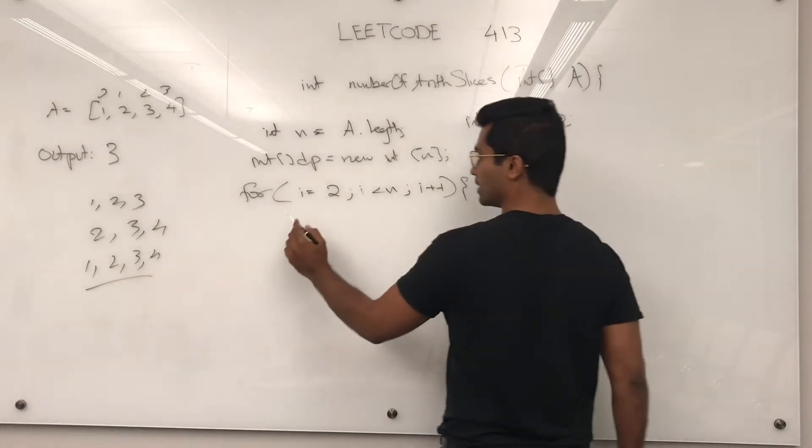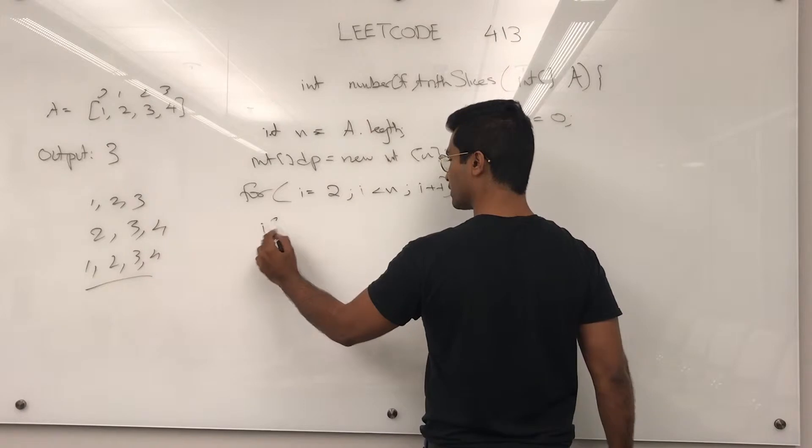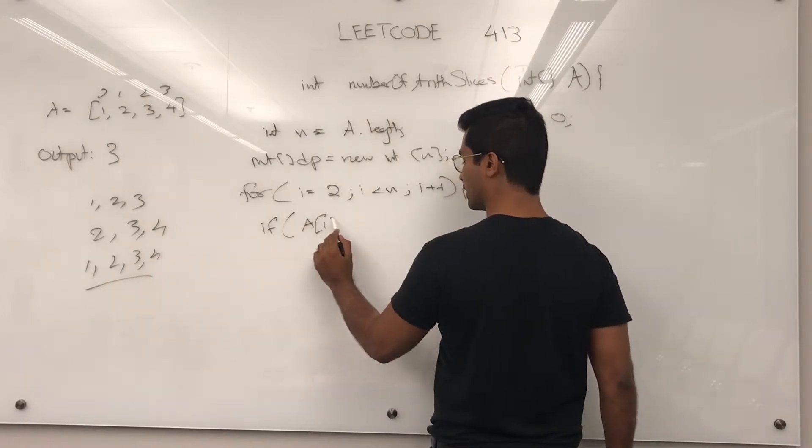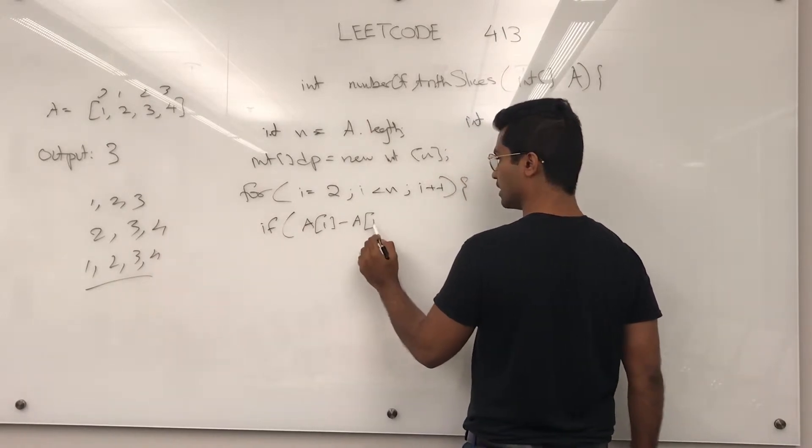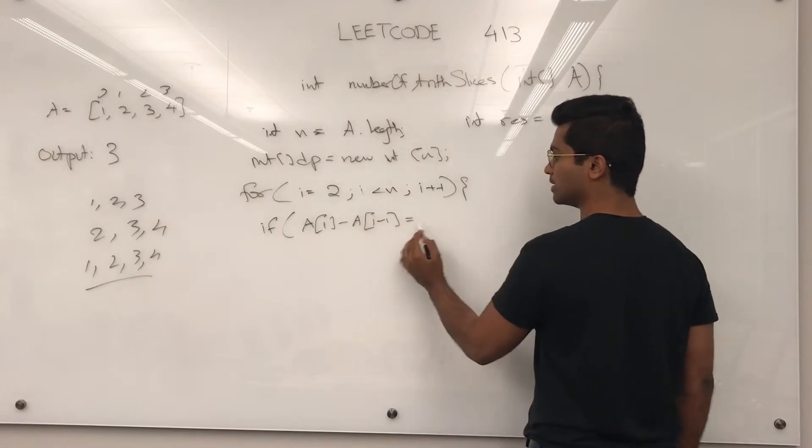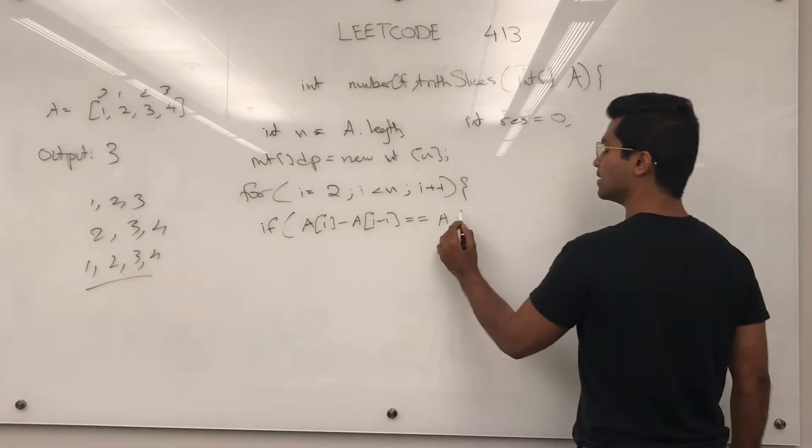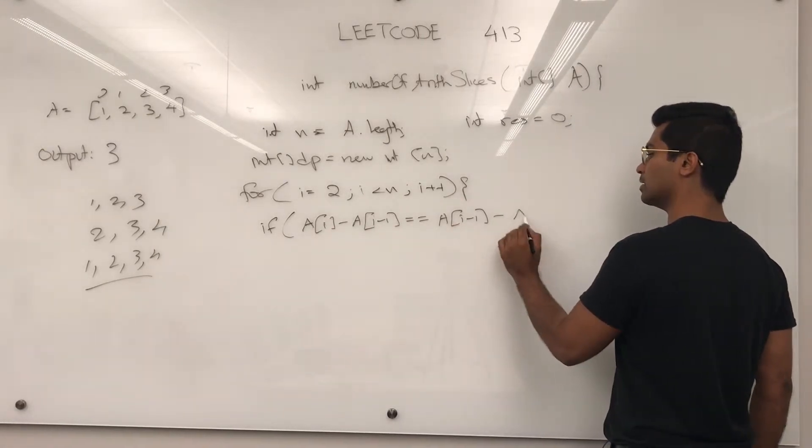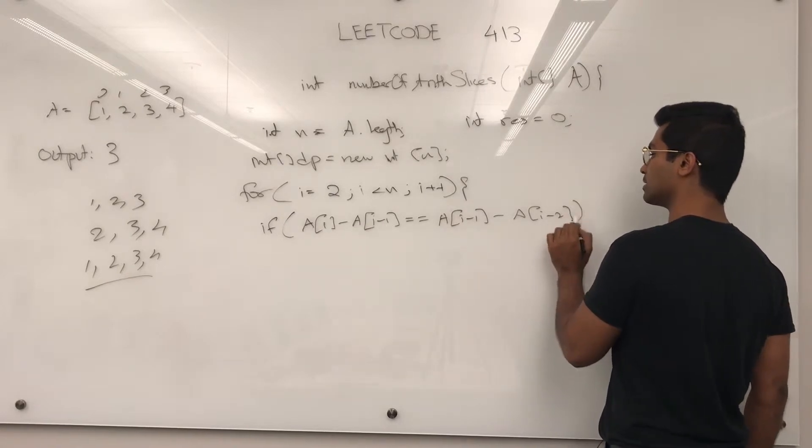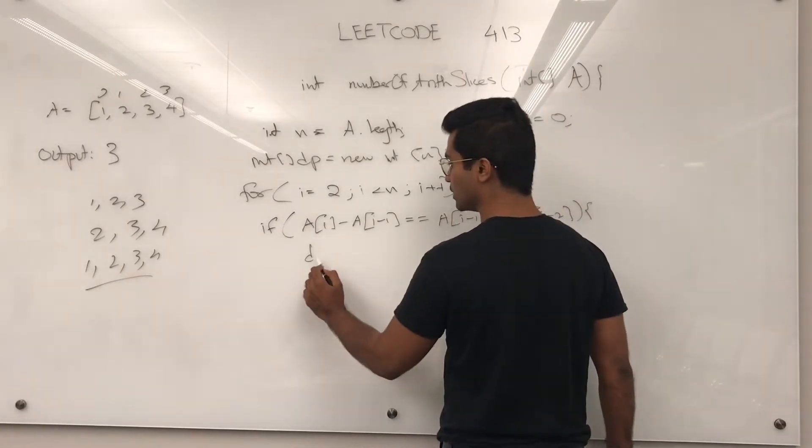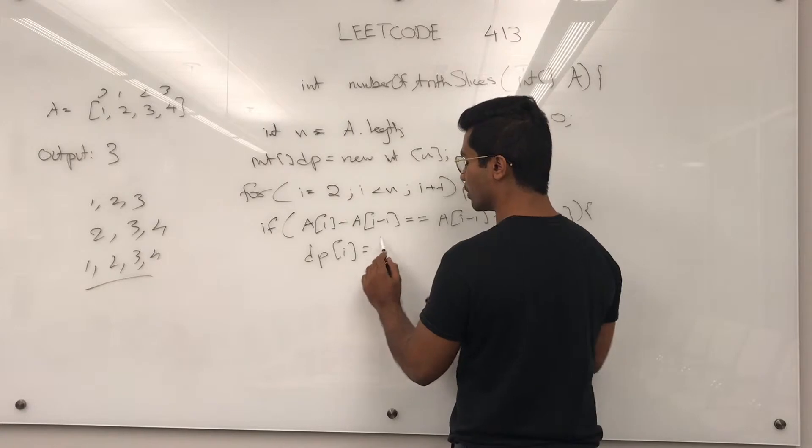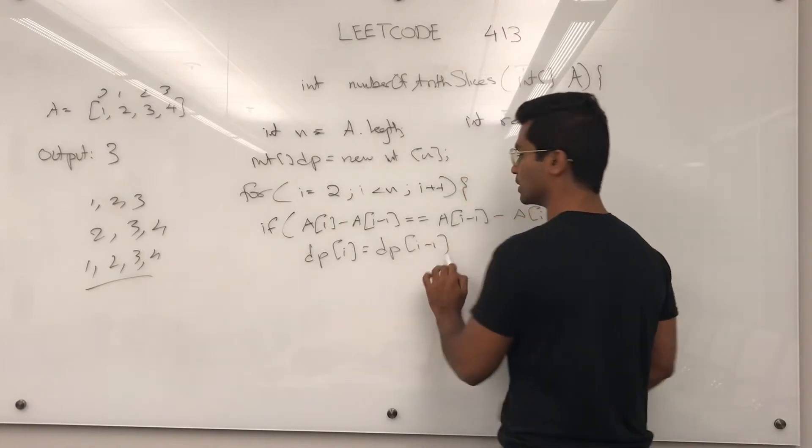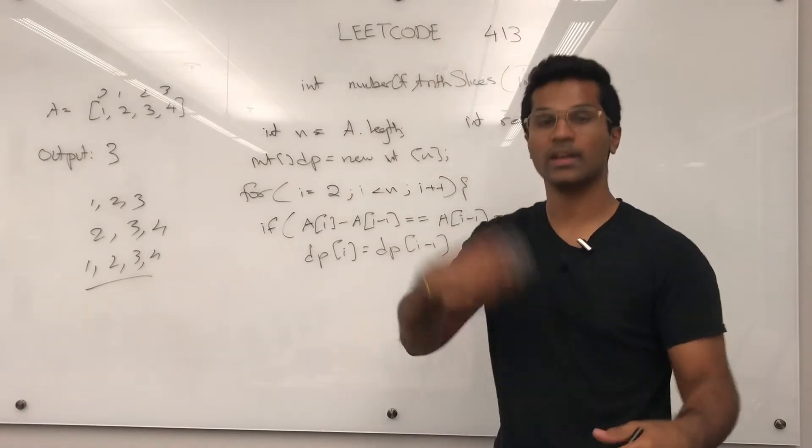Because of that one, we're going to have if a of i minus 1, the difference between that is going to be the difference of this, then what we're going to do, DP of i, until that point, is going to be the DP of i minus 1, until the previous one behind it, and add one more.